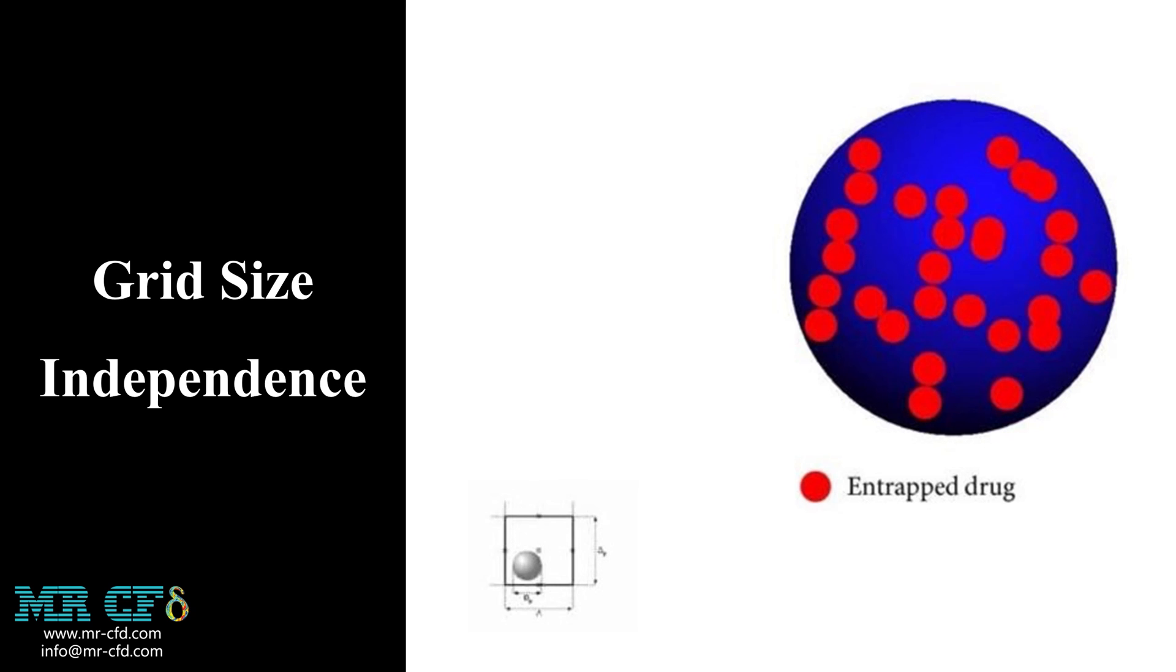Therefore, we need to perform a mesh grid with different sizes while monitoring an important parameter as a result. As the parameter value fluctuations get into an acceptable range, the solution becomes independent of the mesh grid. From another perspective,